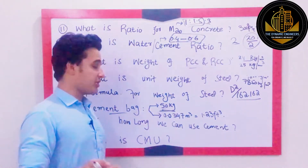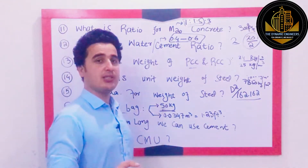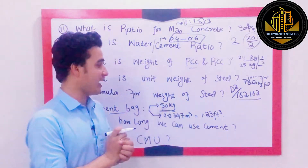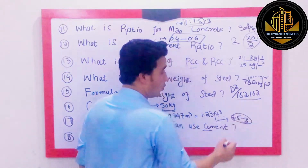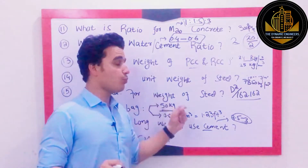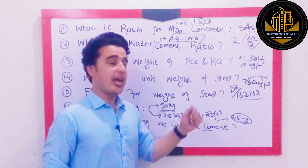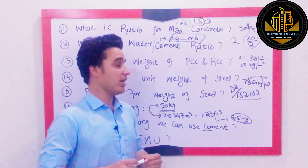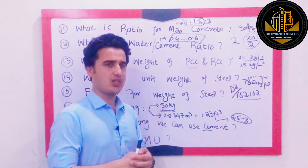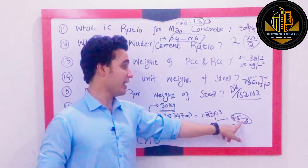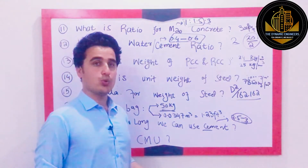Question number 18: How long can we use cement? If cement is stored under normal temperature and moisture conditions, it can be used for 2.5 to 3 months from the date of manufacture. After that, the cement is considered expired and unusable, because cement loses strength over time.